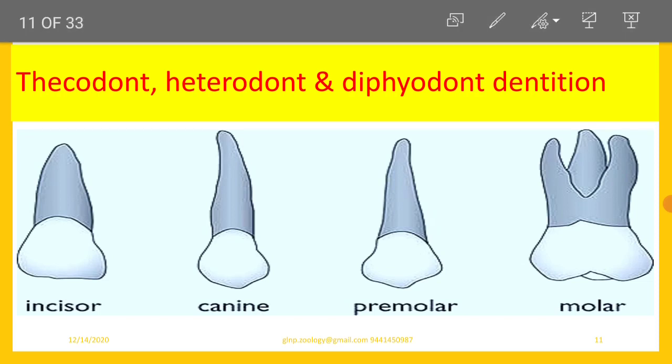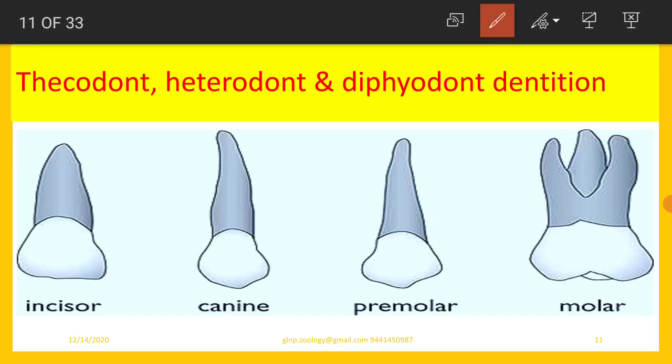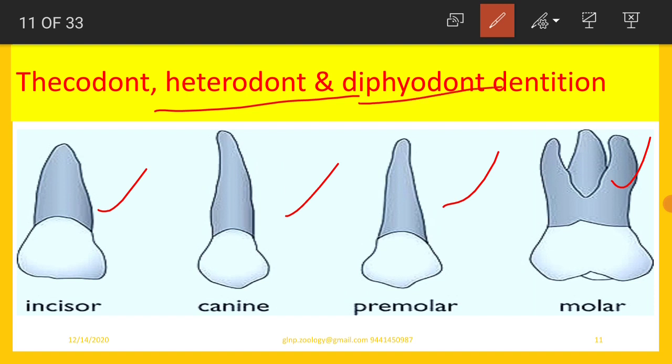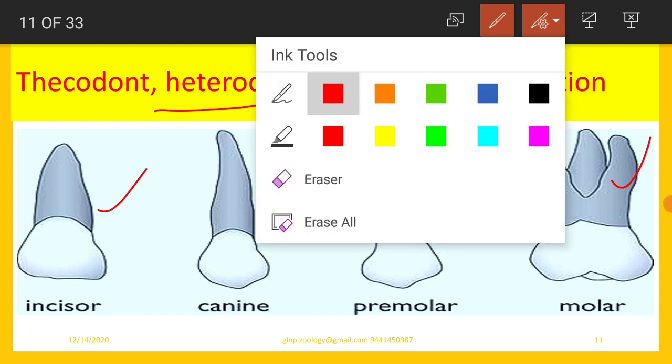Thecodont dentition means the teeth are embedded in the deep sockets of the jaw. Heterodont dentition means there are four types of teeth: incisors, canines, premolars, and molars. Because of these different types of teeth, the dentition in mammals is known as heterodont. Diphyodont dentition is the dentition where there are two sets of teeth in the lifetime — the first set is called milk dentition and the second is called permanent dentition.